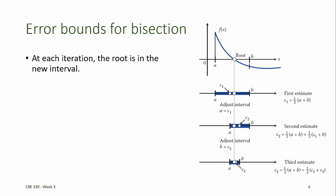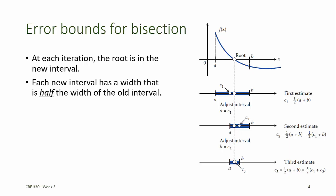One of the advantages of the bisection method is that it has very precise error bounds. At each iteration, the root is assumed to be in the new interval. And each new interval has a width that is exactly half of the width of the old interval.